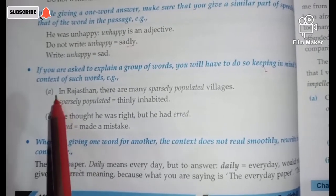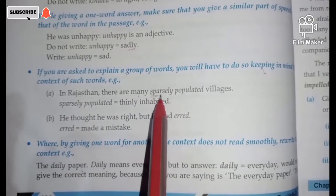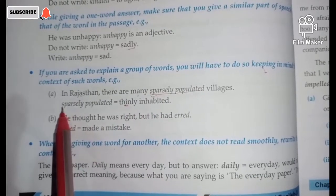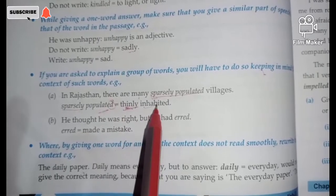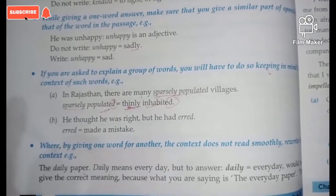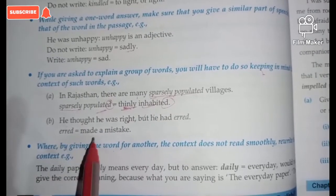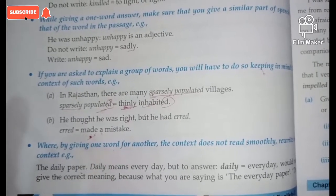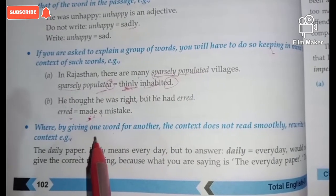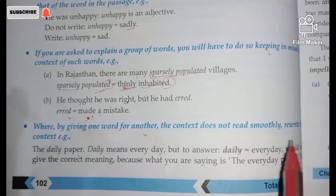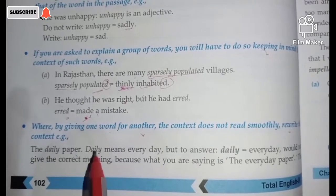Fifth guideline: if you are asked to explain a group of words, do so keeping in mind the context of those words. Example: 'In Rajasthan, there are many sparsely populated villages.' The meaning asked is of 'sparsely populated,' and the answer is 'thinly populated.' Note that 'sparsely' is an adverb and 'thinly' is also an adverb; 'populated' is past tense and 'inhabited' is also past tense. Another example: 'He thought he was right but he had erred' — 'erred' means 'made a mistake,' not 'make a mistake,' as the word is in past tense.